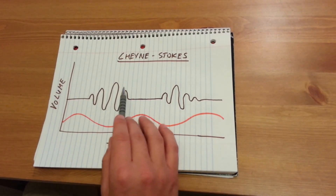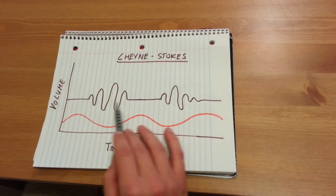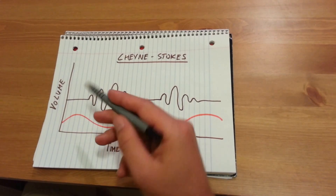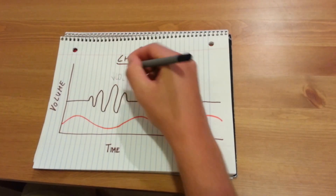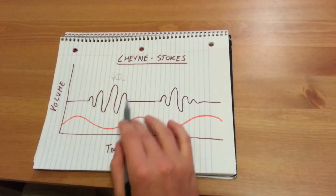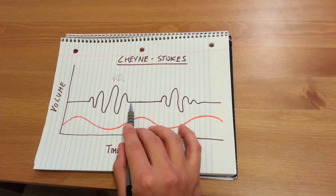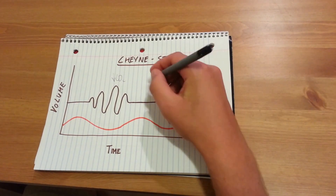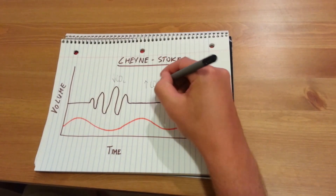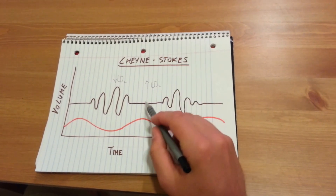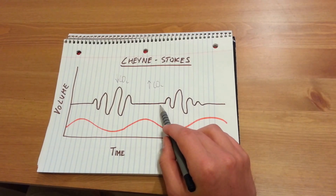Again, these hyperventilatory stages are trying to decrease CO2 by blowing it off and increasing our amount of exhalation, and the apneic stages are trying to increase CO2 by decreasing the amount of blown off CO2.